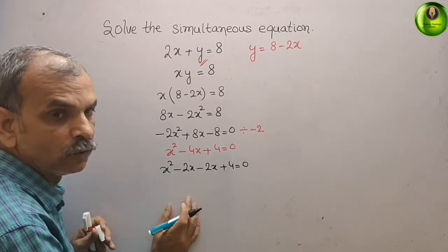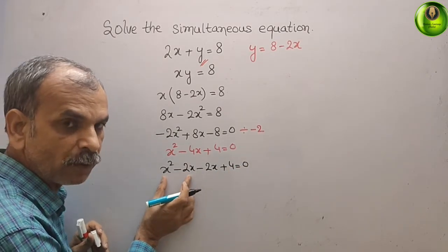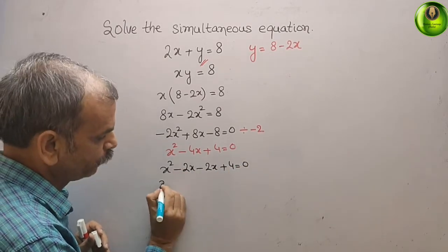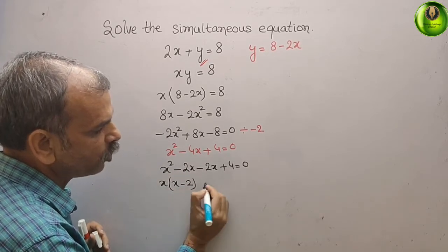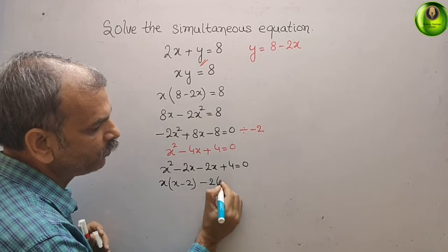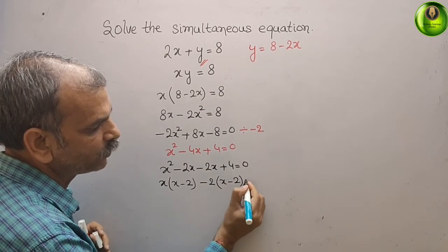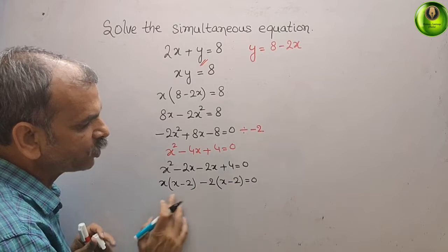That gives you 0. What is common? x is common, we will get x minus 2. Here what is common? Minus 2 is common, we will get x minus 2, that gives you 0.